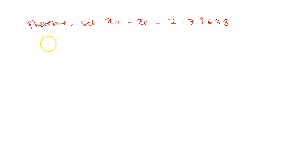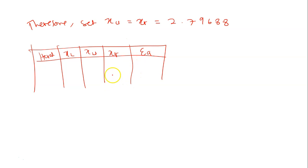So I'm not going to show you the third iteration. But at the end of your third iteration you need to come up again with a table of summary. Here you need to put iteration. Your x_l, your x_u, x_r and your ea.